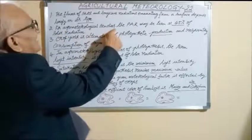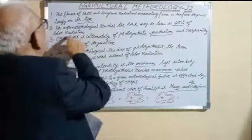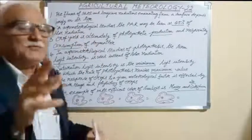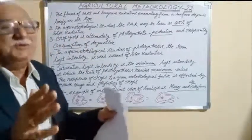Now, for agro-meteorology studies, the PAR may be taken as 45% of solar radiation. 45% of the solar radiation is the PAR, photosynthetic active radiation.